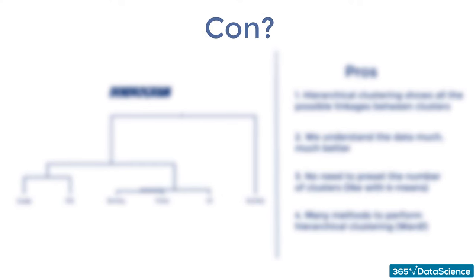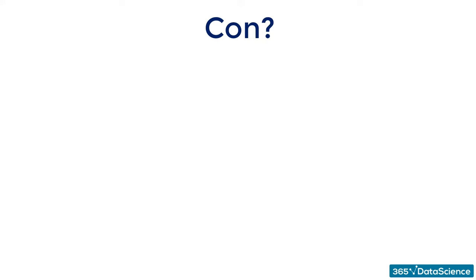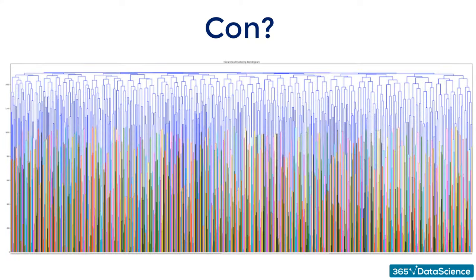The biggest con, which is also one of the reasons why hierarchical clustering is far from amazing, is scalability. With 1,000 observations, the dendrogram is extremely hard to examine. It is also extremely computationally expensive — the more observations there are, the slower it gets, while K-means hardly has this issue.